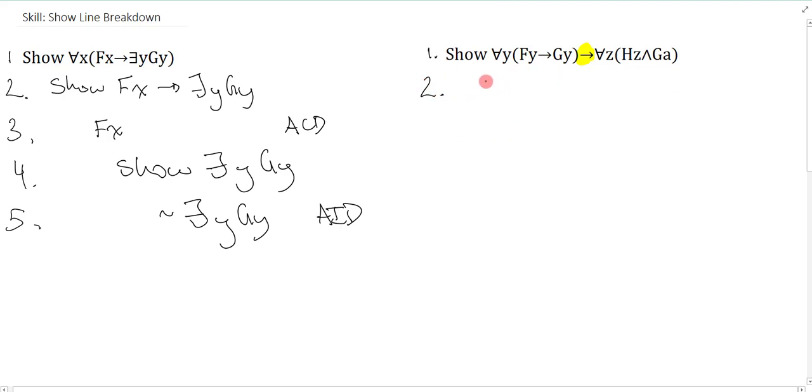Now once we know it's a conditional, I know how to proceed. I can immediately assume the antecedent, and that is an assume CD, and then I can show the consequent. So we don't care that my antecedent itself is universal. That will matter later on when I do some basic rules to it, but for now it's just the antecedent, so I assume it and I show the consequent.